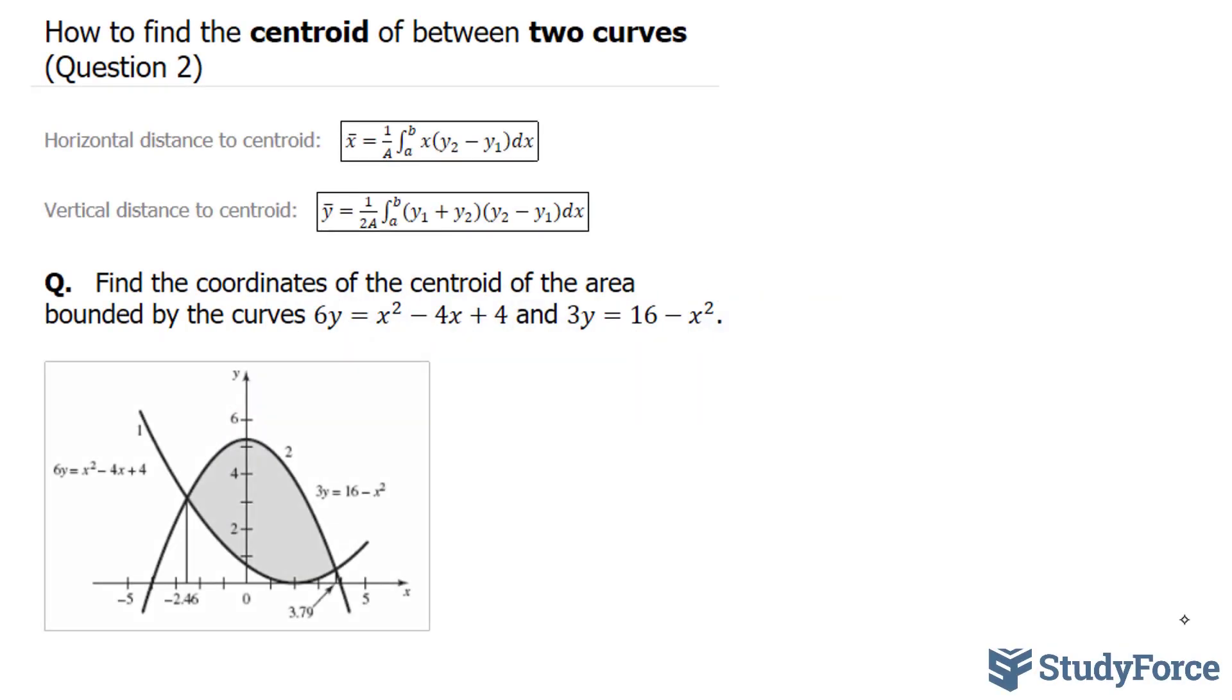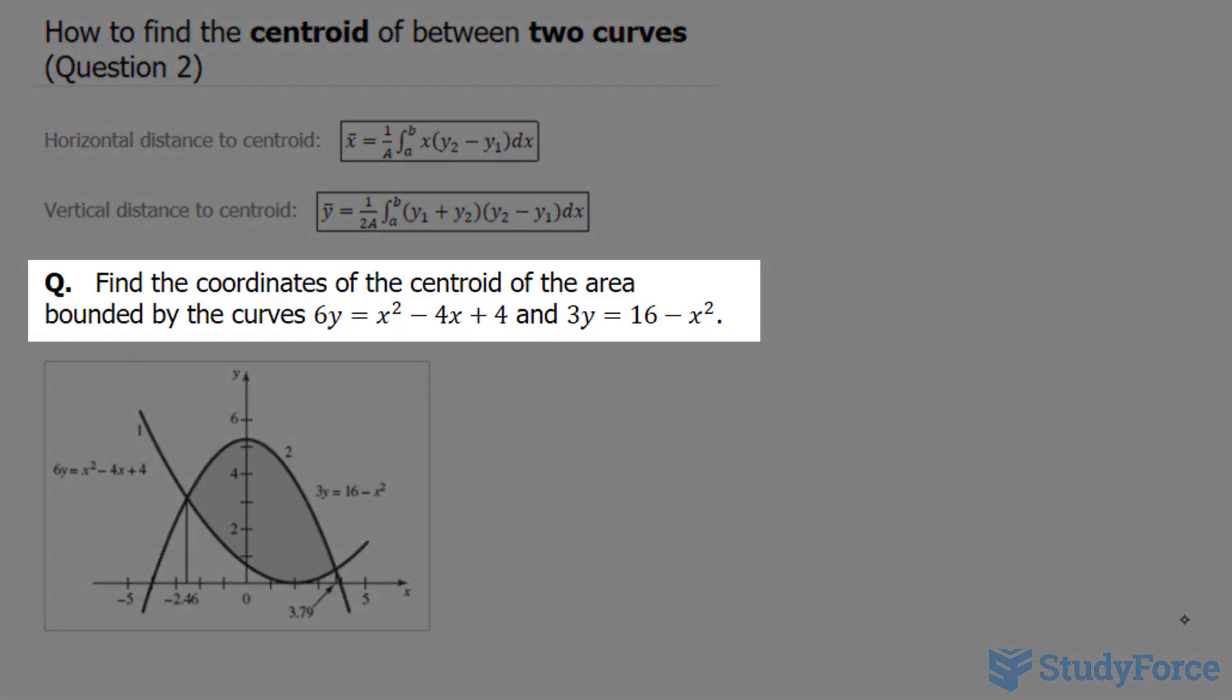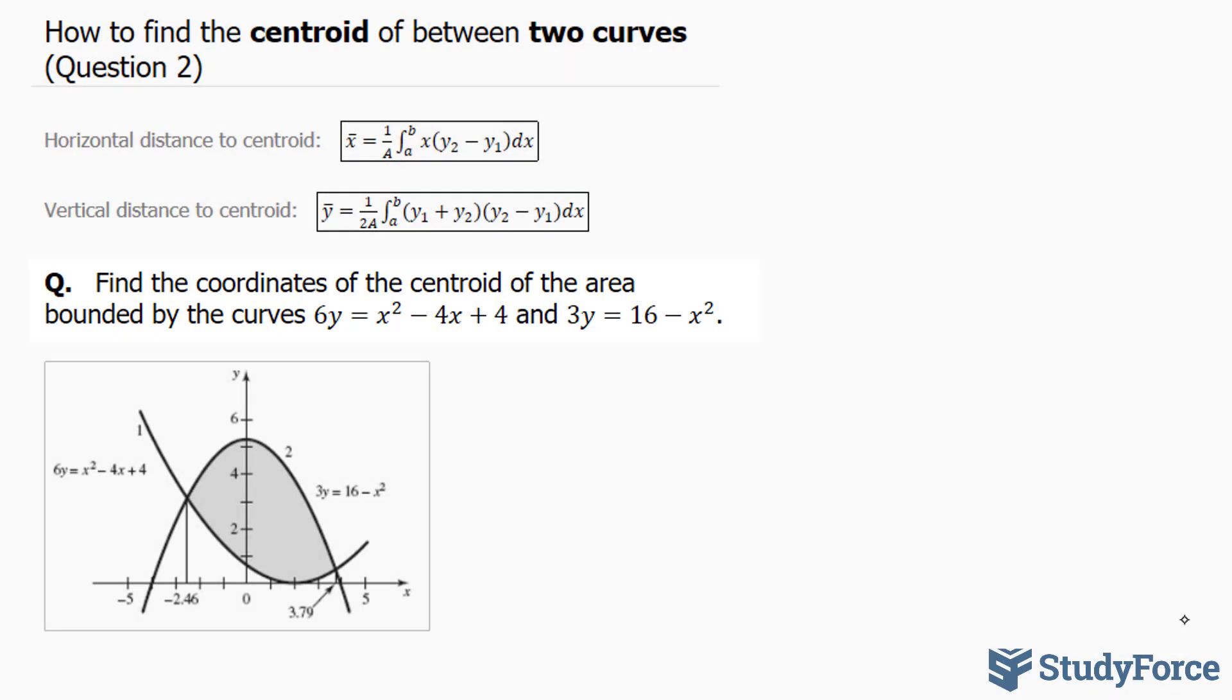In part two of this series, we're asked to find the coordinates of the centroid of the area bounded by the two curves written right here. This function has been graphed already and it's represented by this curve. And this function has been graphed and it's represented by this curve. I'm going to call this equation number one, and this equation number two.